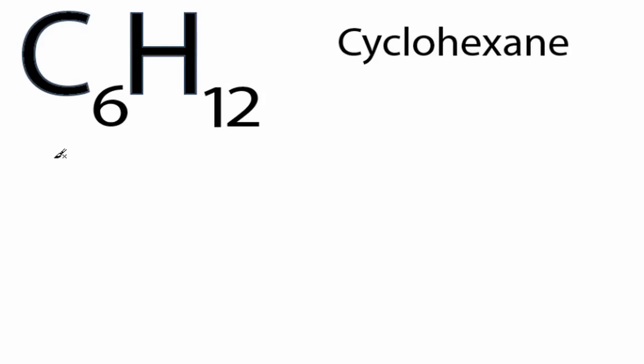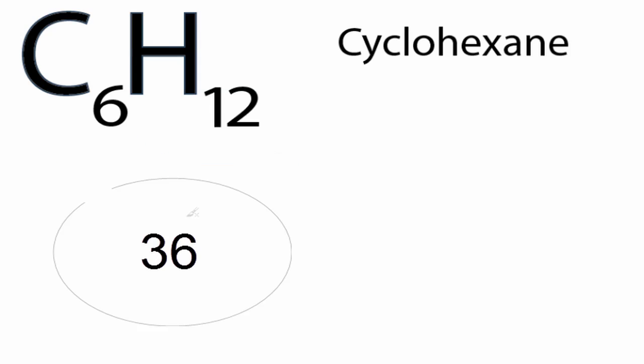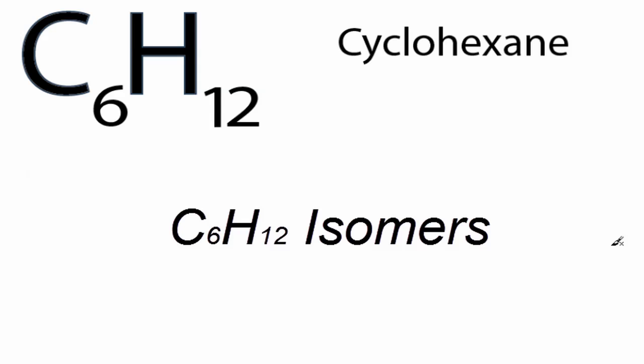In this video, we're going to look at the Lewis structure for C6H12. C6H12 has a total of 36 valence electrons. There are a number of different ways you can draw the Lewis structure for C6H12 — I believe there are 16 of them. If you want to look that up, just type in C6H12 isomers on Google and you should find more information.